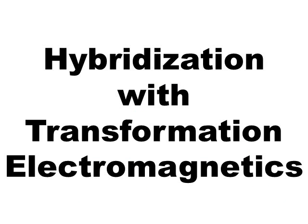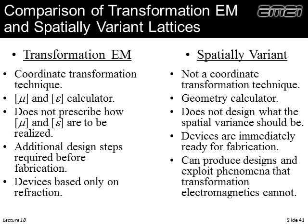That concludes the spatially variant algorithm. Next, I want to talk briefly about differences between this and transformation electromagnetics, and how I think they can be hybridized. Our spatially variant tool is not a coordinate transformation technique — there are no coordinate transformations. We literally draw pictures of how we want it spatially varied and it happens. Transformation electromagnetics is based on Maxwell's equations; the spatially variant tool is not — it's just a geometry calculator.